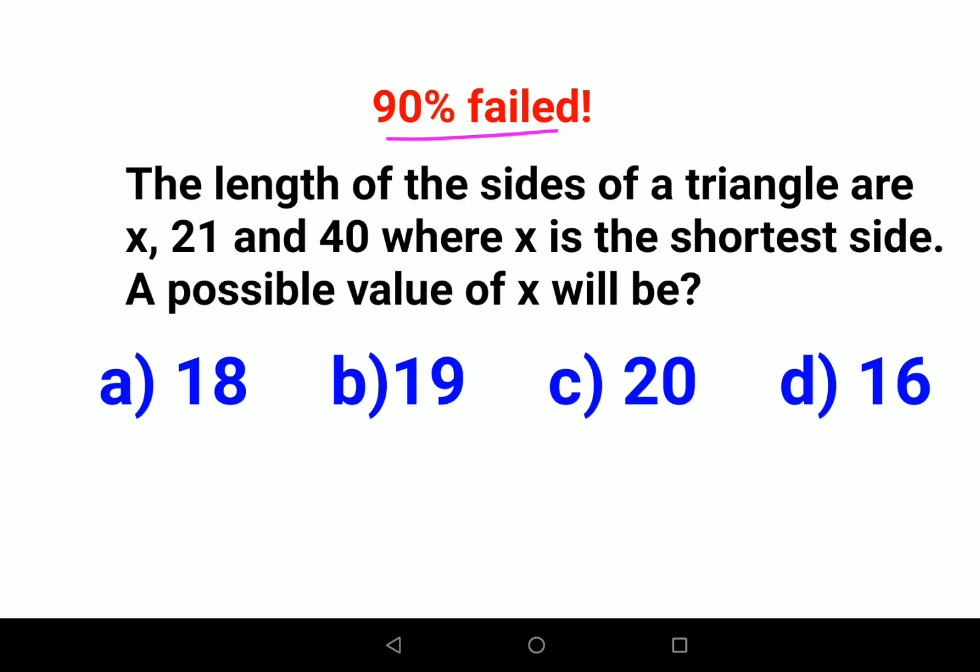So see, they are saying the length of the sides of the triangle are x, 21 and 40. And they are saying x is the shortest side. So a possible value of x will be. Now a lot of people think that the sum total of two sides has to be greater than the third side. This is the logic.